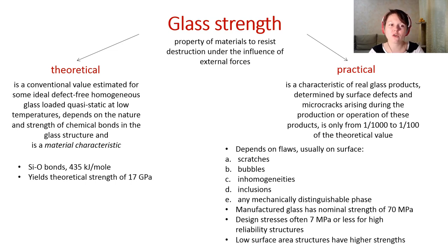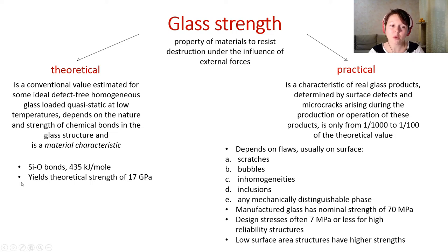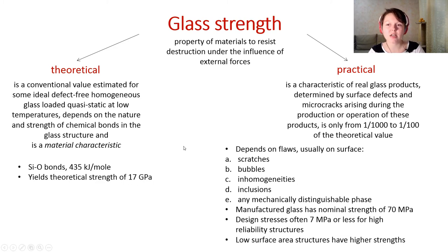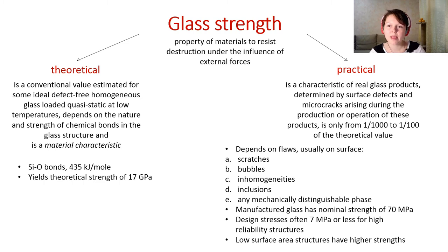Theoretical glass strength depends on the nature and strength of chemical bonds in the glass structure. For silicate glass, the energy of bonds between silicon and oxygen atoms is very large, giving a theoretical glass strength of 17 GPa. Practical glass strength is a characteristic of real glass products, limited by surface defects such as scratches, bubbles, inhomogeneous inclusions, and other mechanically distinguishable phases. Because of this, it is only 1/100 to 1/1000 of the theoretical value.